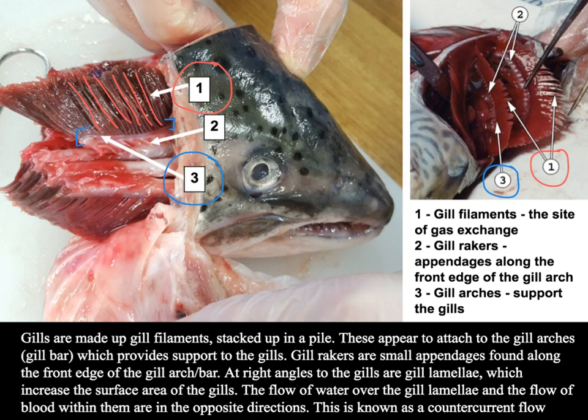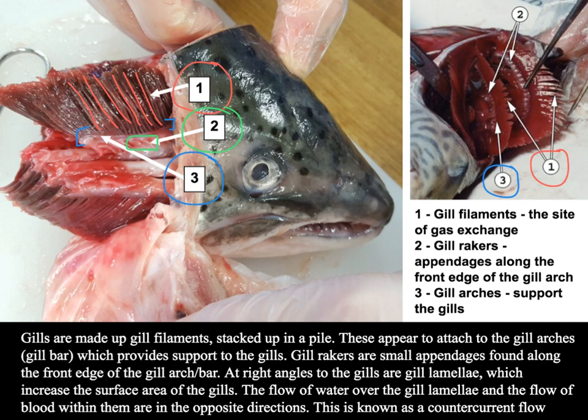These little spiky bits — number two on the diagram — are simply gill rakers: small appendages found along the front edge of the gill arch or gill bar. At right angles to the filaments are the gill lamellae, which increase surface area. That's what I was referring to with the previous exam question — there are many gill lamellae that make up the gills, and that's all about increasing the surface area for gas exchange.